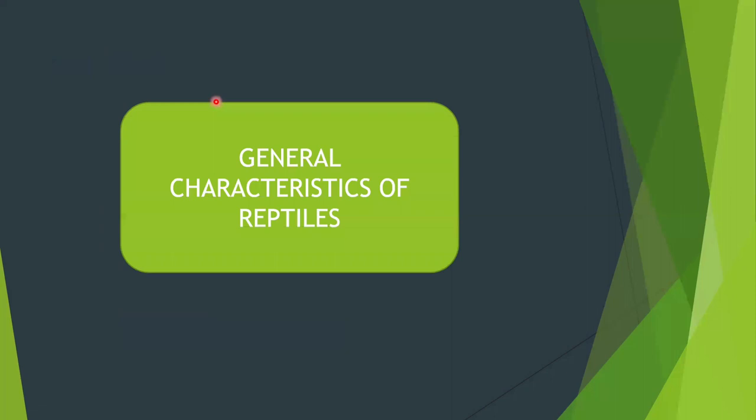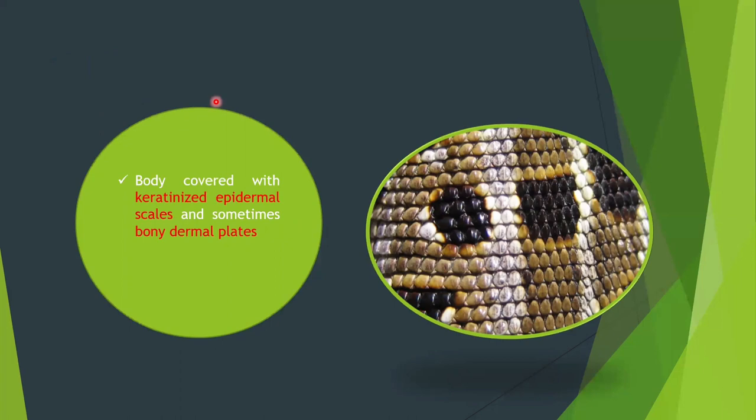The body of reptiles is covered with keratinized epidermal scales. The scales originate from the epidermis and are made up of keratin. Sometimes bony dermal plates are also present. The integument is covered with few glands for secretions of a mucoid type.